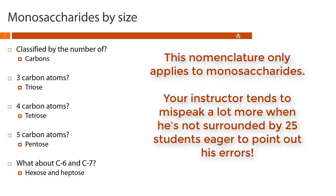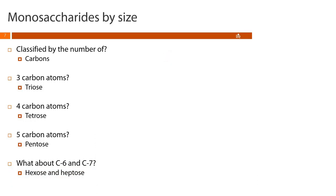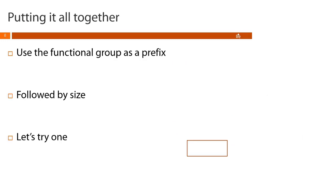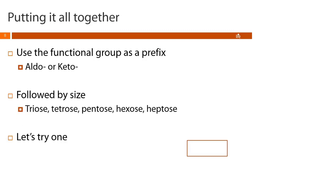A six-carbon carbohydrate would be a hexose and a seven-carbon would be a heptose. To describe a carbohydrate by both its functional group and number of carbons, we use the functional group as a prefix — either aldo or keto — followed by its size: triose, tetrose, pentose, hexose, or heptose. Go ahead and pause and classify the monosaccharide shown.